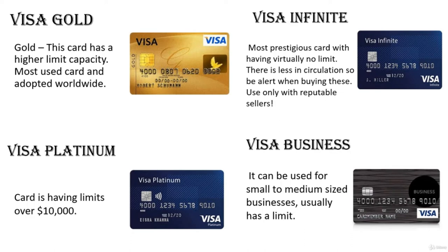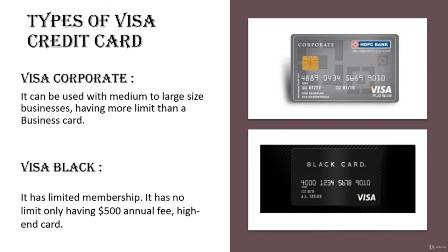Visa Infinite should only be used with a reputable seller because these cards are very important and the owners are extremely rich — normal people cannot afford it. Visa Business is used for business purposes. Visa Corporate is used in medium to large businesses with more limit than business cards. Visa Black is a rare card with limited membership, no limit, only a $500 annual fee — mostly used by extremely rich businesspeople. Be very careful when buying Visa Black.